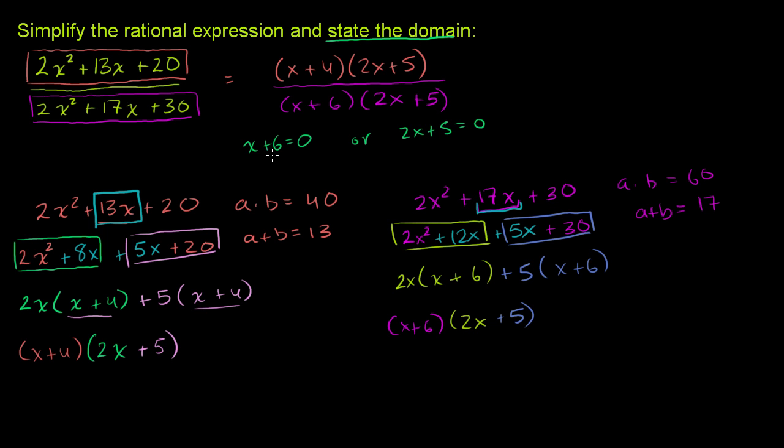And we could just solve for x here. Subtract 6 from both sides. You get x is equal to negative 6. And if you subtract 5 from both sides, you get 2x is equal to negative 5. Divide both sides by 2. You get x is equal to negative 5 halves.